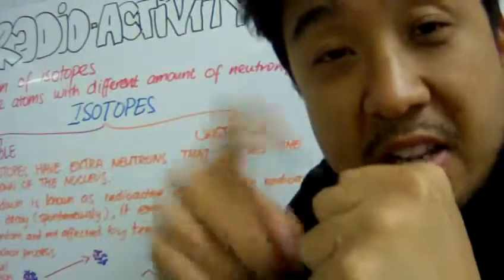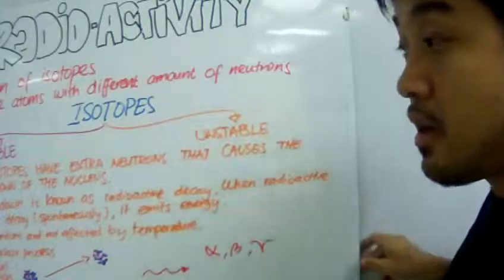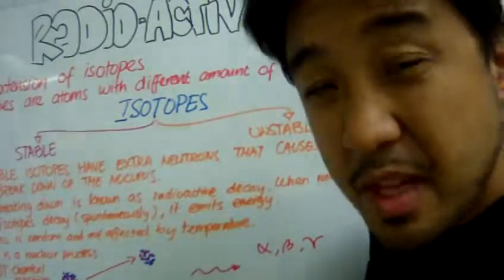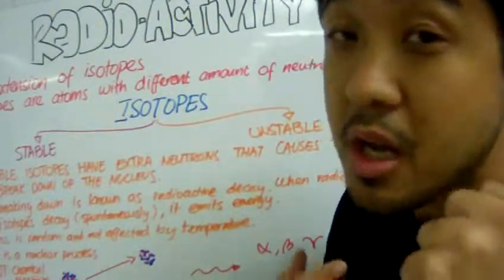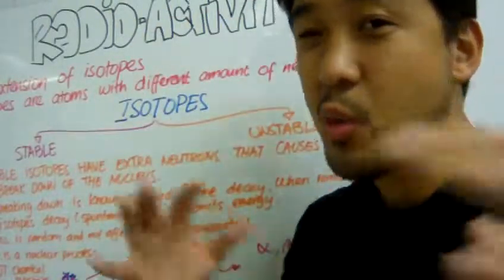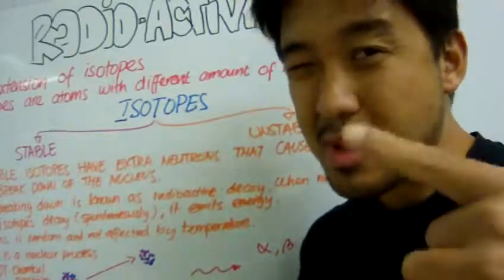Why is it unstable? Well, that's because the isotopes have an extra amount of neutrons, and the ratio of protons and neutrons are now wack. So that means it's unstable.